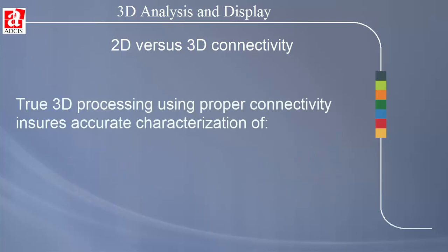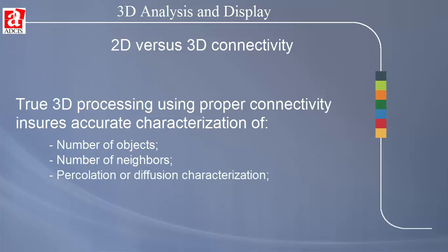It is critical to use true 3D processing and the proper connectivity in order to accurately characterize properties such as the number of objects, the number of neighboring objects, percolation and diffusion characterization, and shape characterization such as length, skeleton, and orientation.